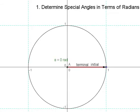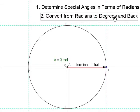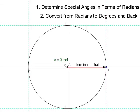We're going to be determining what the special angles are in terms of radians, and by the end of this activity, you should be able to convert from radians to degrees and back. And all I'm going to do is tell you one radian measure, and then it's up to you to figure out the rest.